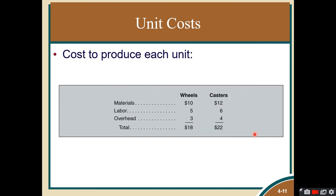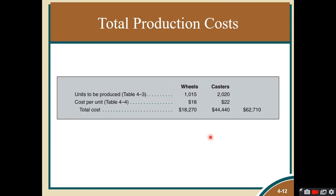To compute unit costs, recall the components: materials, labor, and overhead. For one unit of wheels: $10 materials, $5 labor, and $3 overhead, giving a total unit cost of $18. For casters: $12 materials, $6 labor, and $4 overhead, giving a total unit cost of $22. These are the unit costs for wheels and casters.